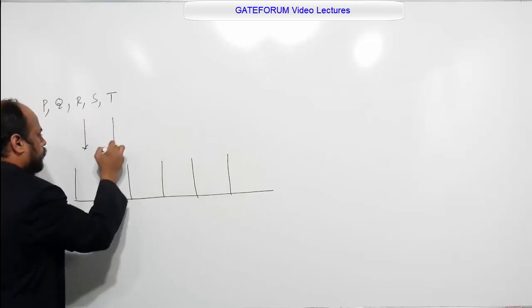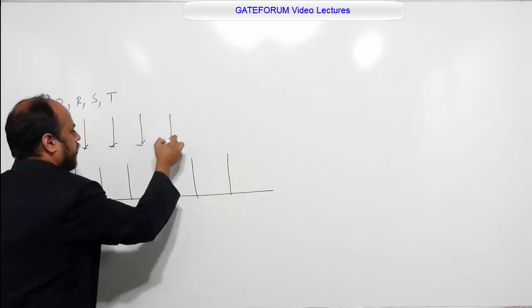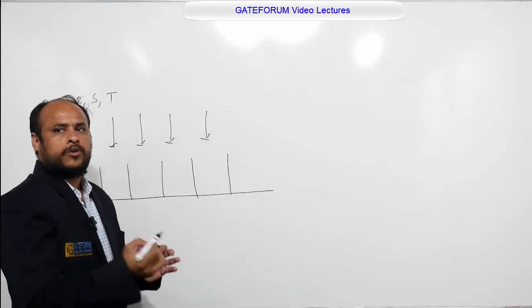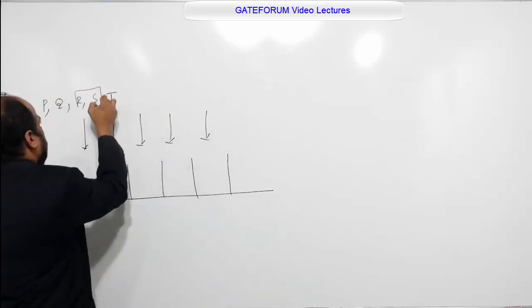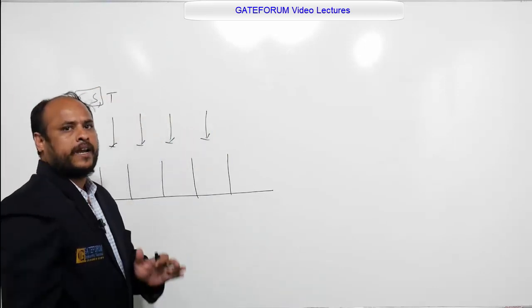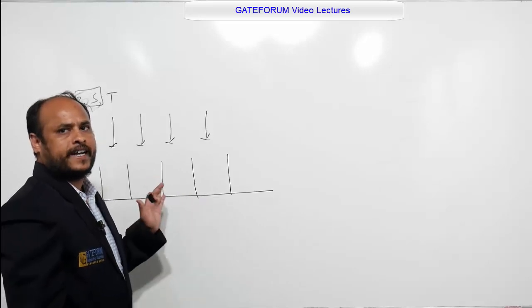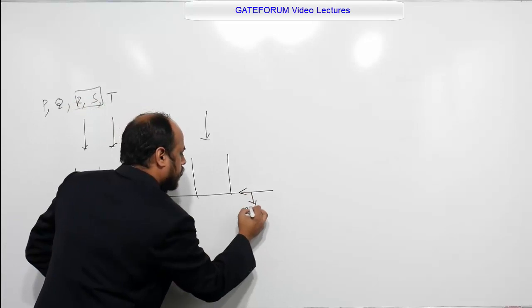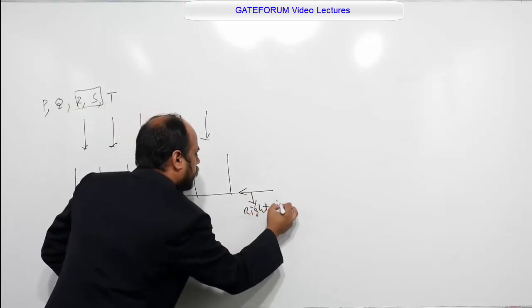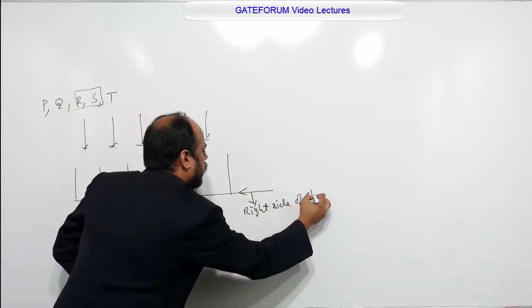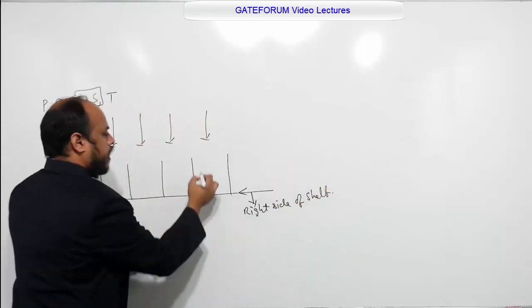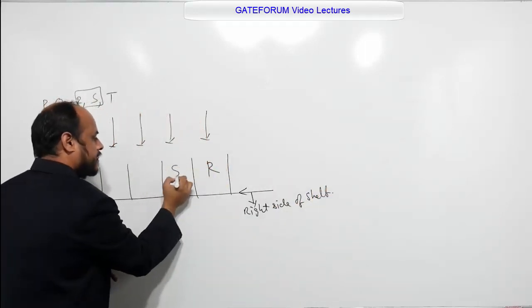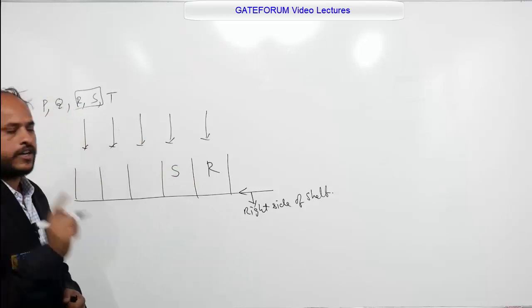But here, one condition is given. What is that? The books R and S are to be arranged first and second, respectively, from the right side. So this is the right side of shelf. First we have to fill R, the second one is S, according to the given condition.